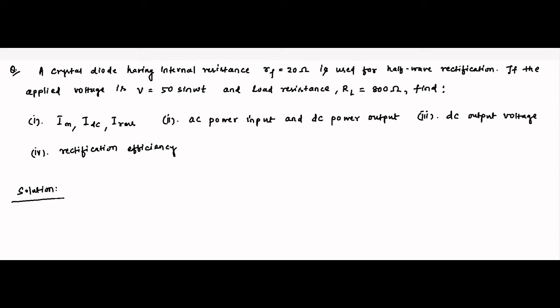Here is another question on half wave rectifier circuits. A crystal diode having internal resistance RF equal to 20 ohms is used for half wave rectification. The applied voltage is given by v = 50 sin(ωt) and load resistance RL = 800 ohms. We have to find IM, IDC, and IRMS — the peak value, DC average value, and RMS value of the current, as well as the AC power input, DC power output, DC output voltage, and rectification efficiency. This question covers all the important rectifier parameters.